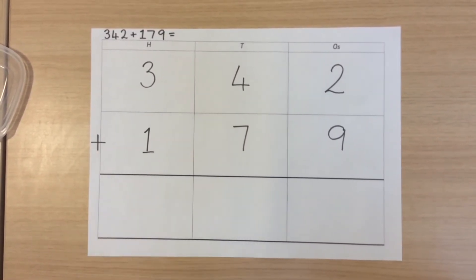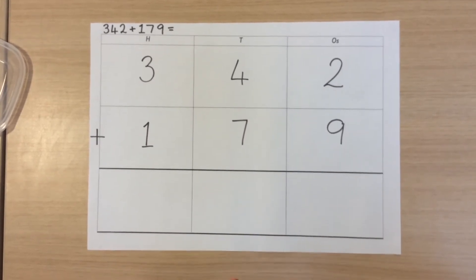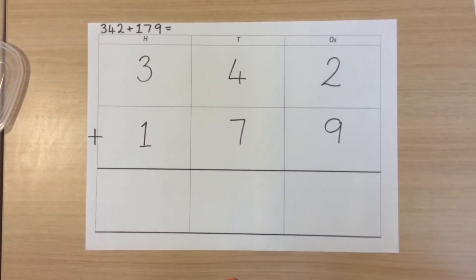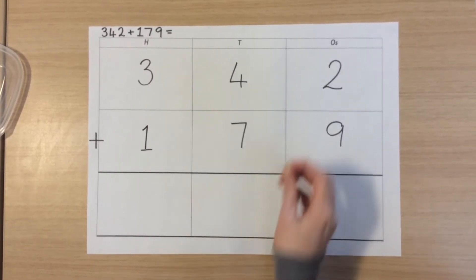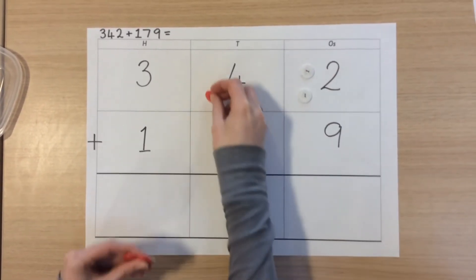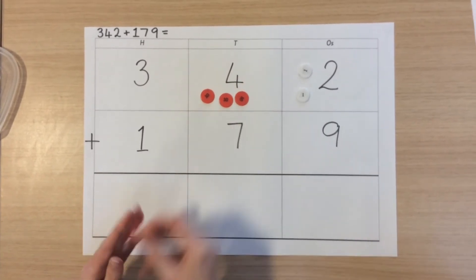As always, don't forget your operation. We begin by putting the counters in the relevant boxes for the place value columns. So 342, we put two one-counters in, four ten-counters, and three hundreds.